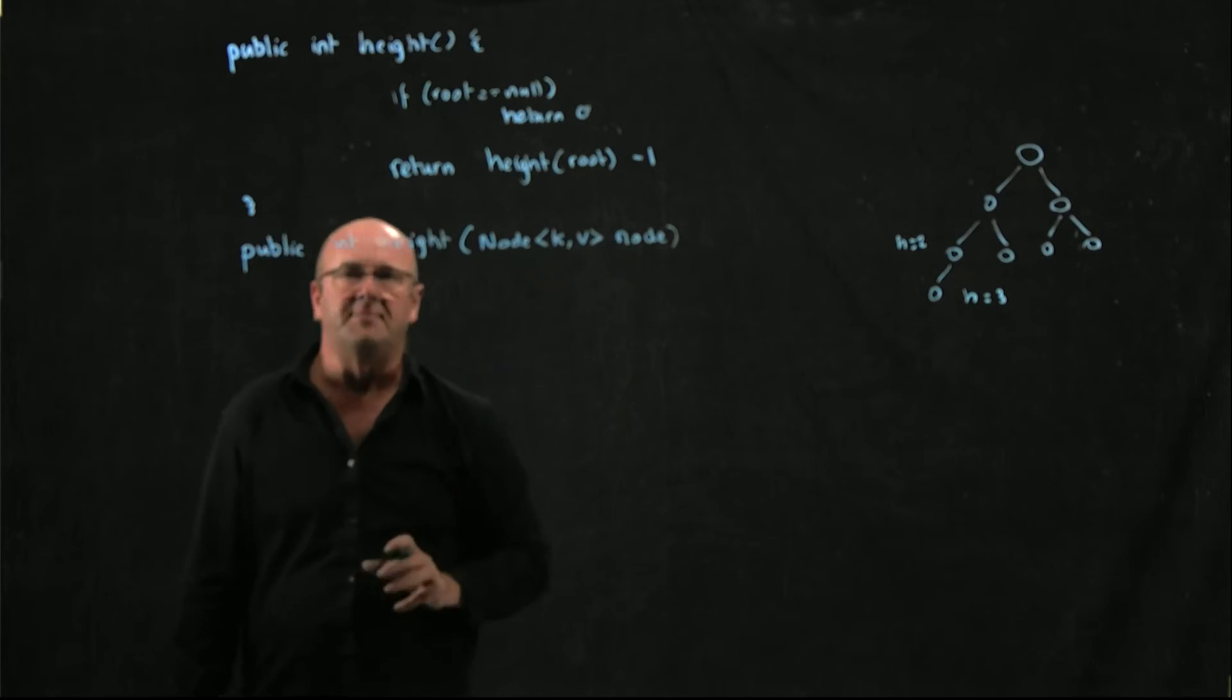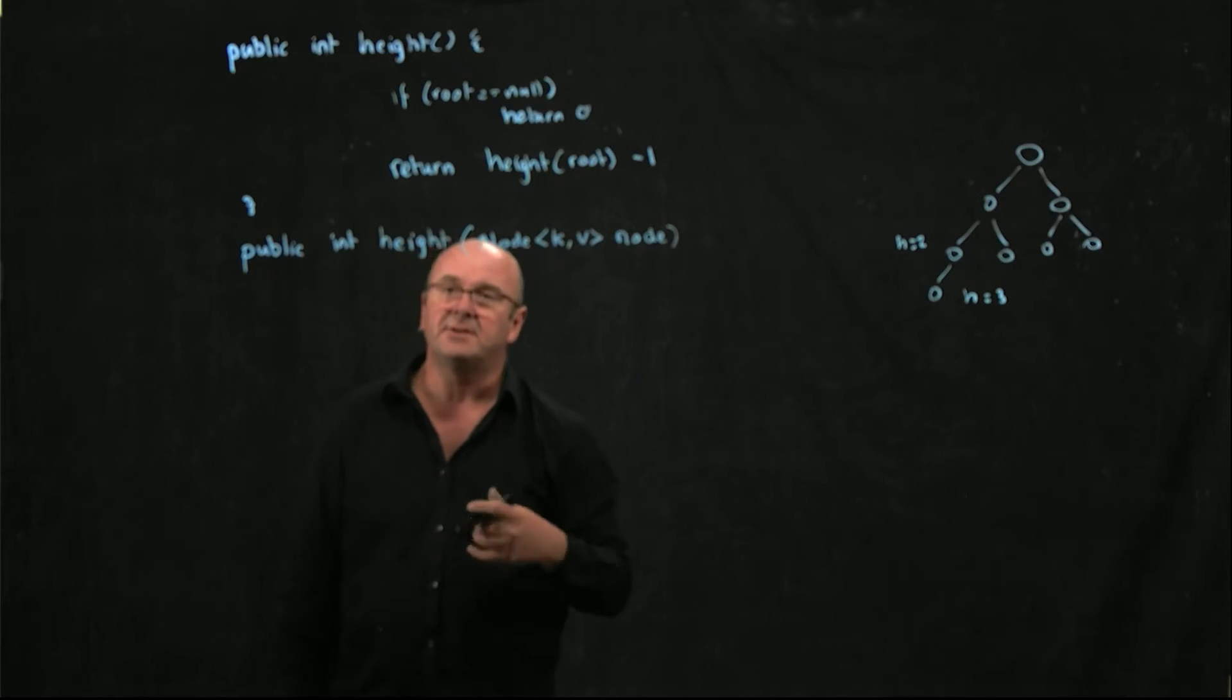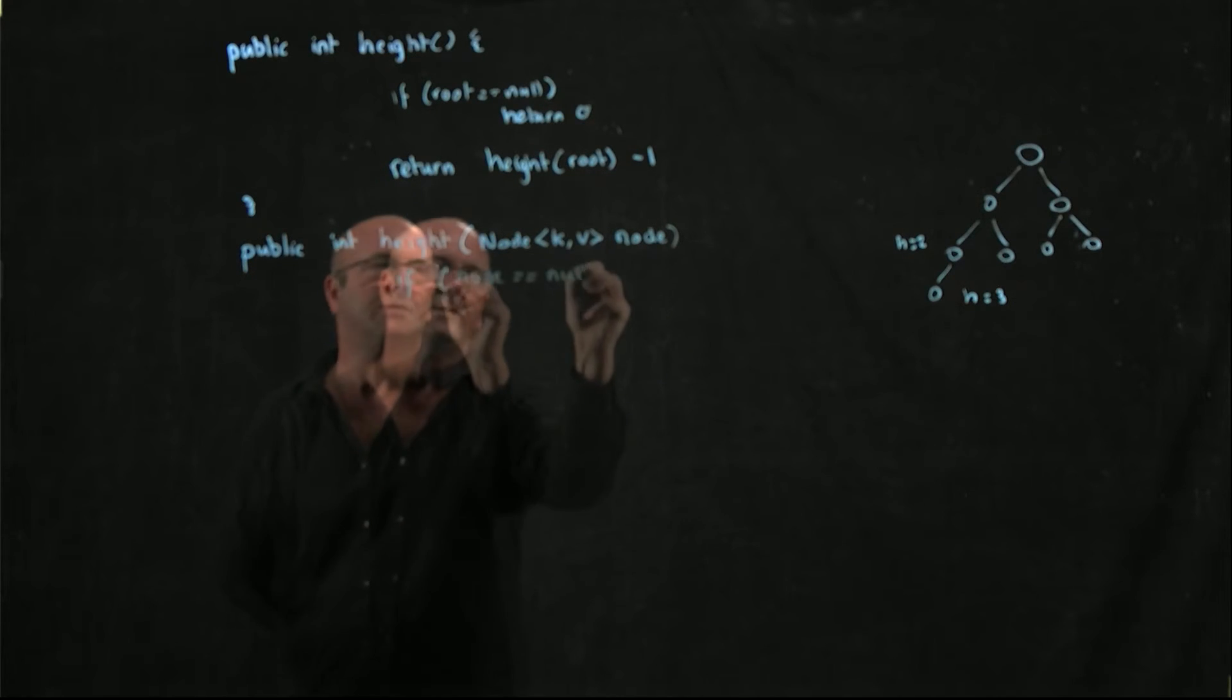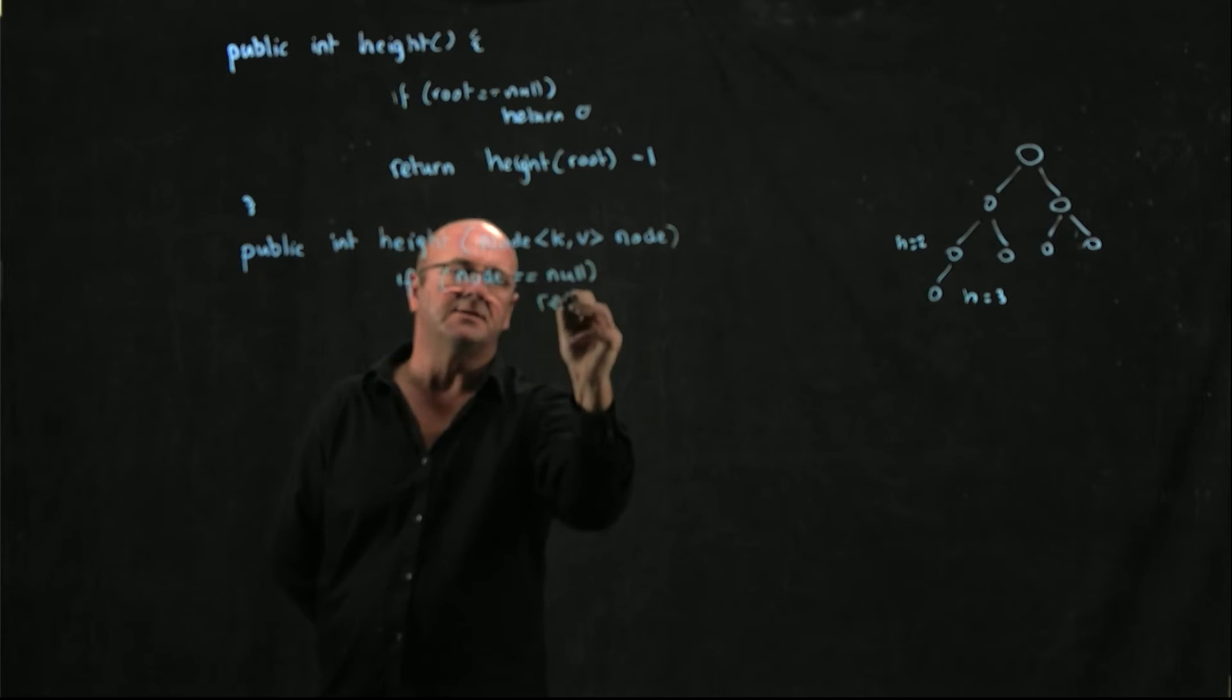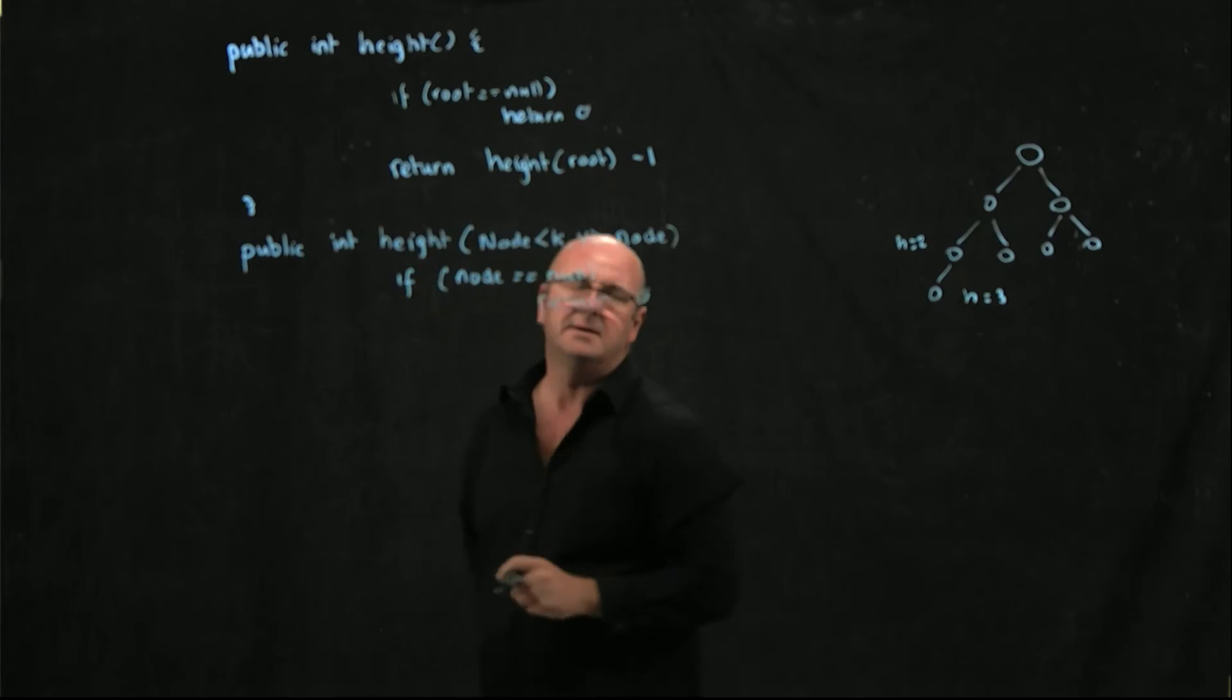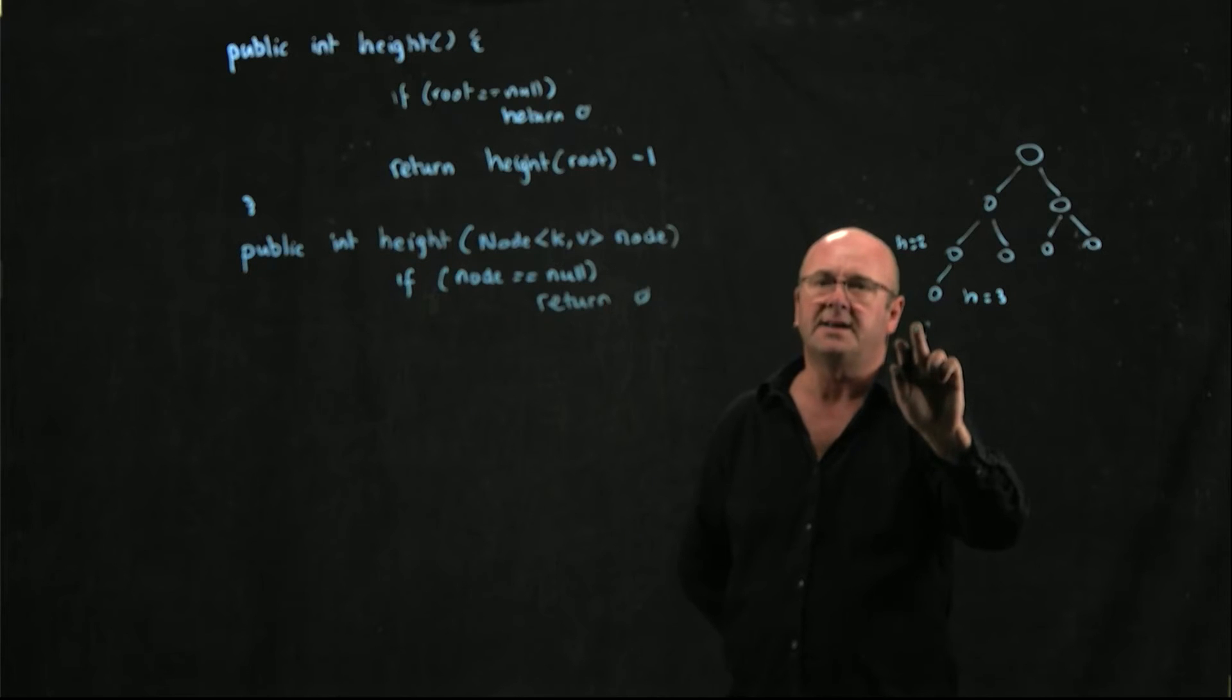So I've been given a node, so if the node is null, then my height is 0. If I'm down here, my height is 0.